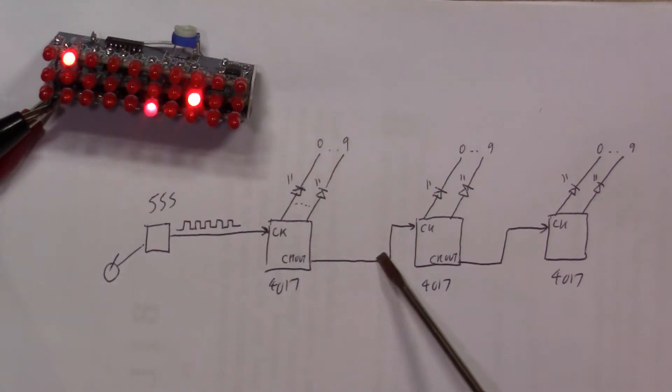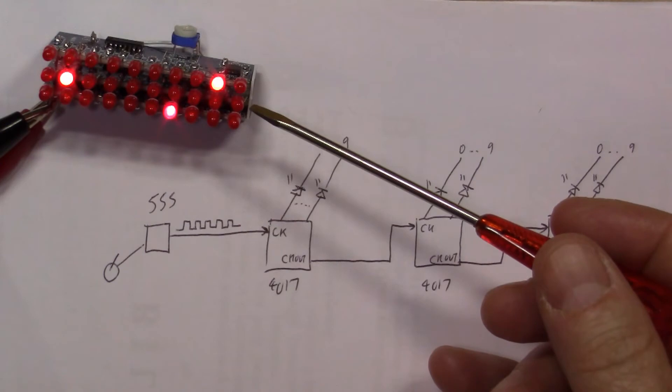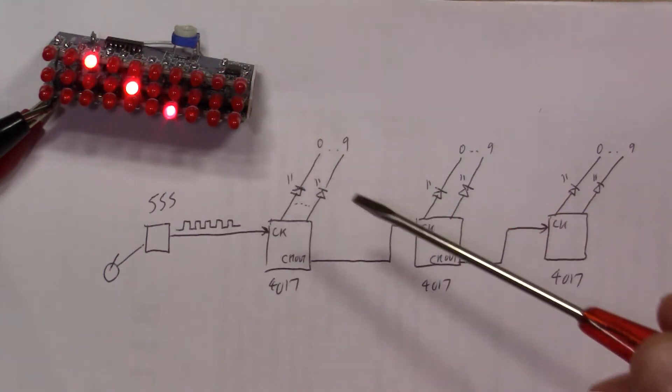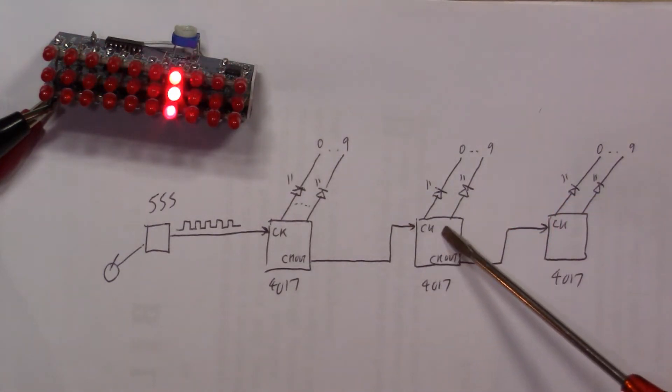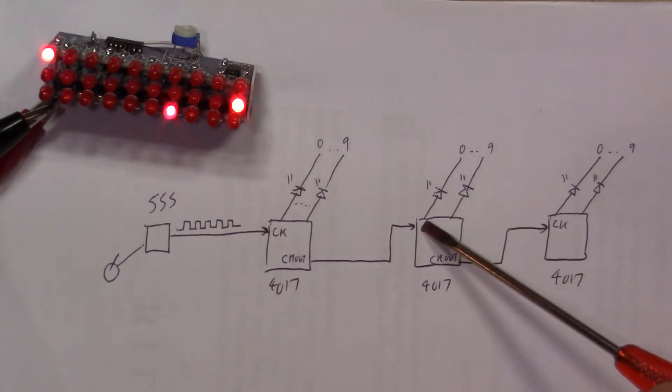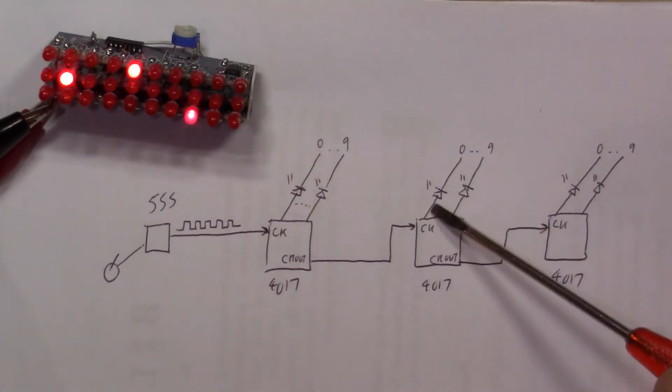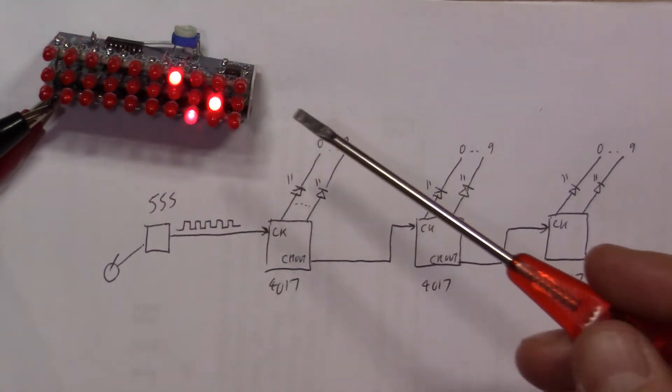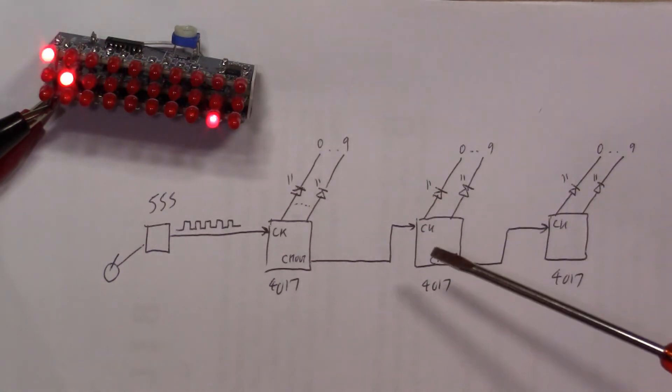So our clock out here feeds the second 4017, so that's driving the LEDs along the middle row there. And similarly you have 10 LEDs there, so these are the divide by 10 LEDs and they clock only once for every 10 LEDs on the top row.